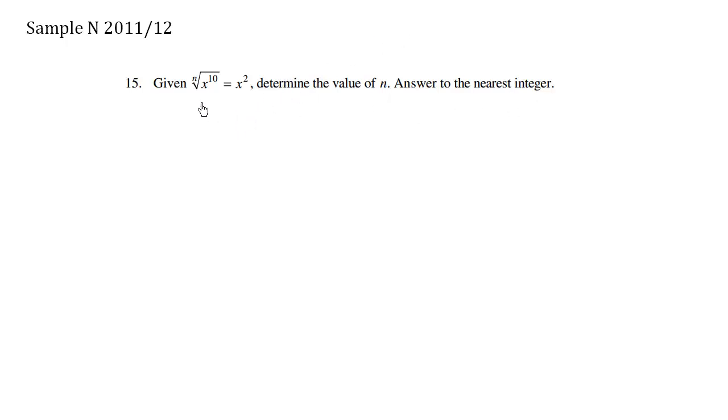So we're going to rewrite the radical as a fraction. Now we should know how to write as a fraction. We simply keep the inside part as this, and then when you have this whole thing under this radical sign, we divide by the actual index which is n. So x to the 10 over n is equals to x squared.